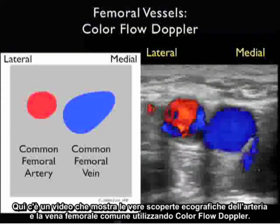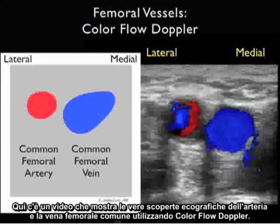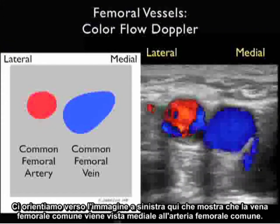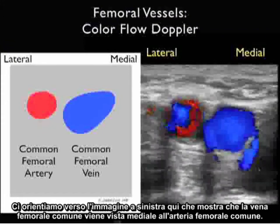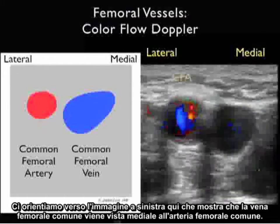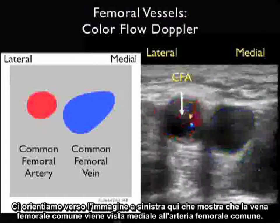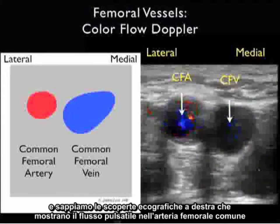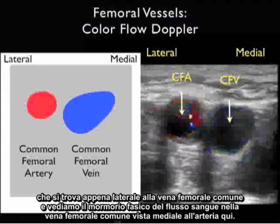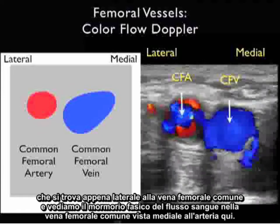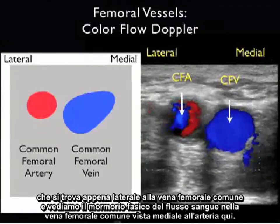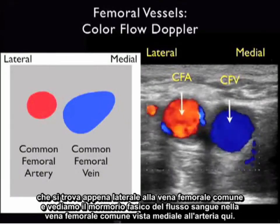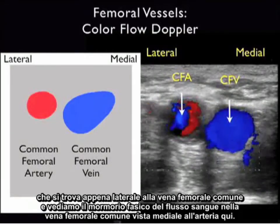Here's a video showing the actual ultrasound findings of the common femoral artery and vein using color flow Doppler. We orient ourselves to the image showing that the common femoral vein will be seen medial to the common femoral artery. We note the pulsatile flow within the common femoral artery located just lateral to the common femoral vein, and the phasic flow of blood within the common femoral vein seen medial to the artery.